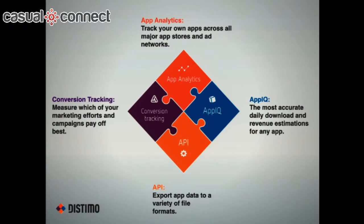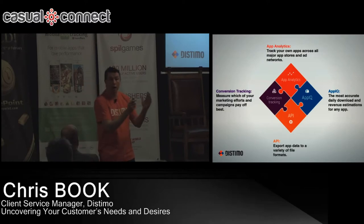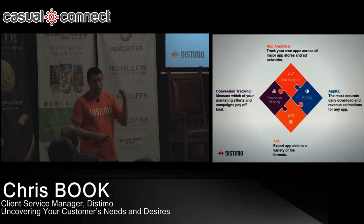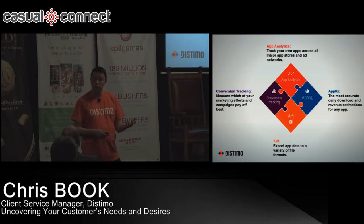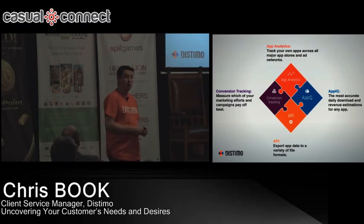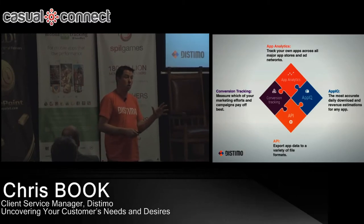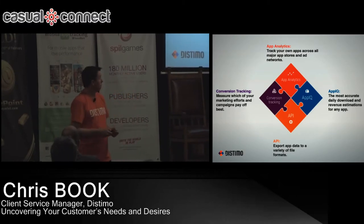What Distimo does: it provides three products. App analytics — so if you publish a game and you want to know your downloads, revenues, reviews, and ratings over time, you don't want to handle iTunes Connect, Google Play, and Amazon store data separately; you want it all in one aggregated place. It's completely free. We also offer conversion tracking, which is also completely free, so you can check campaigns and lifetime value. All data is available through an API. And then we have a paid product called AppIQ, where you can see competitor estimates of their downloads and revenues. I'll explain more about that because the data I'm going to show later is based on some of that information.